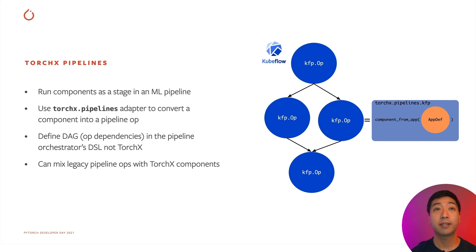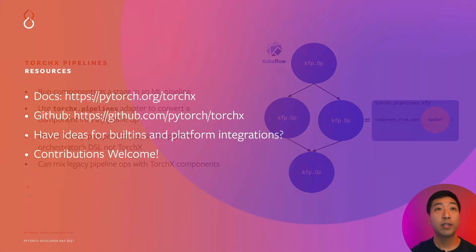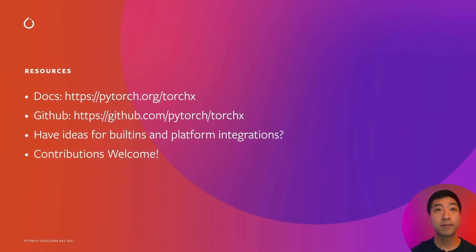With this, we've covered the three basic steps to start using TorchX in production: one, define or choose a component; two, run it as a job; and three, convert it to pipelines. Hopefully you got a good sense of what TorchX is and how it can help accelerate research to production for your organization. We've open sourced TorchX 0.1 with a collection of MVP built-in components, schedulers, and ML pipeline orchestrators. We hope that with your interest and contribution, together we can build a vibrant production ecosystem for PyTorch. Thank you.